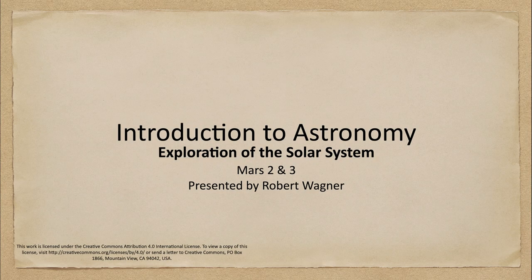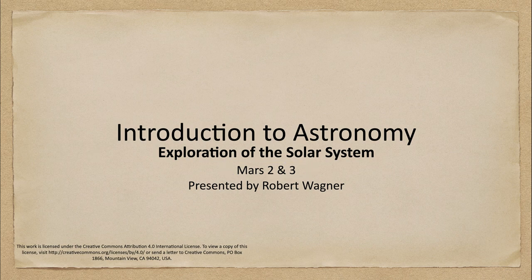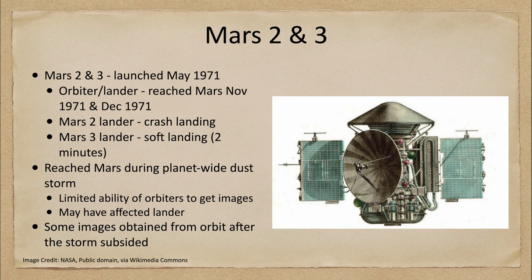Greetings and welcome to the introduction to astronomy. In this discussion we are going to look at the Mars 2 and 3 spacecraft, which as you may guess explored the planet Mars. Mars 2 and 3 were launched in May of 1971, and the orbiter and lander reached Mars in November of 1971 and December of 1971.